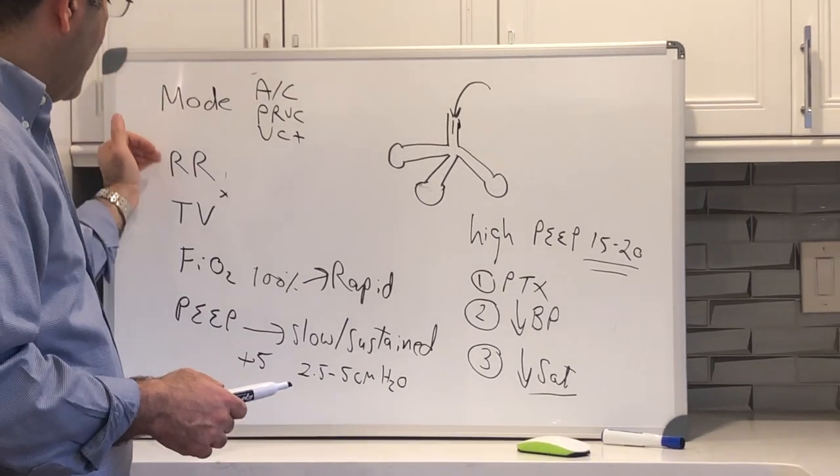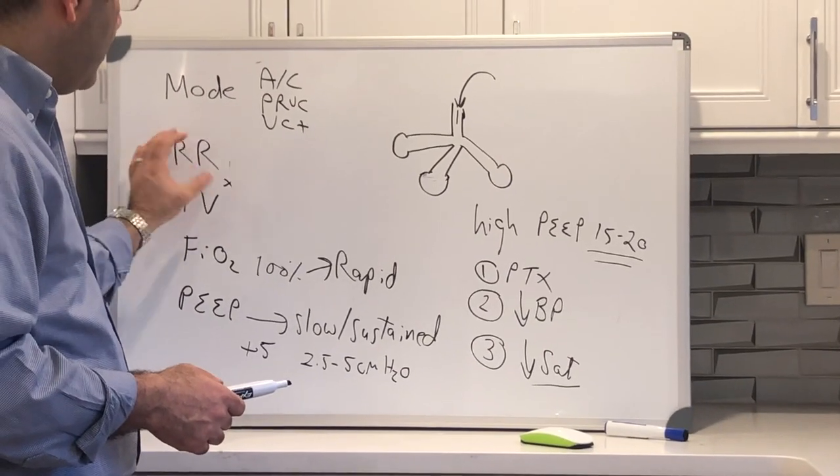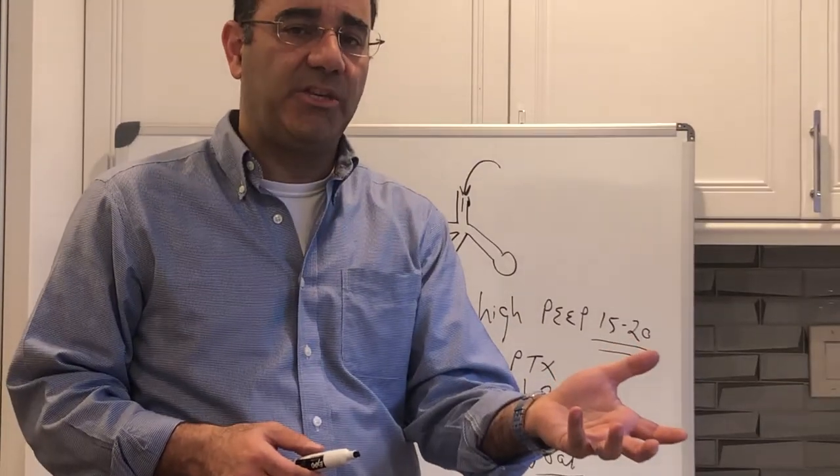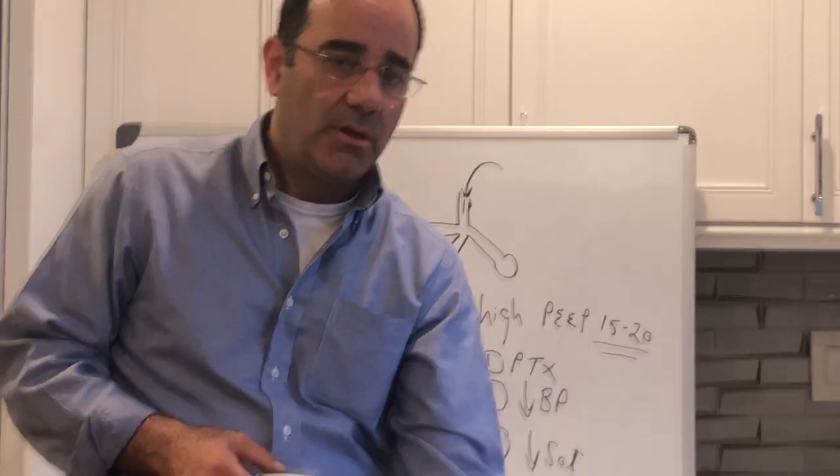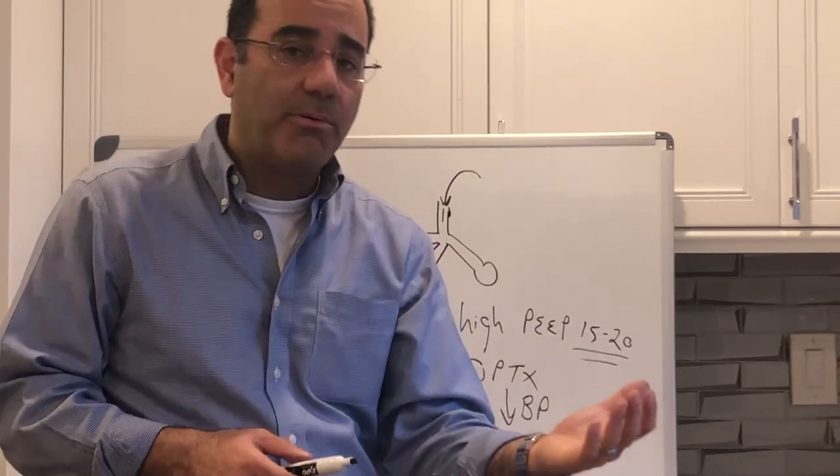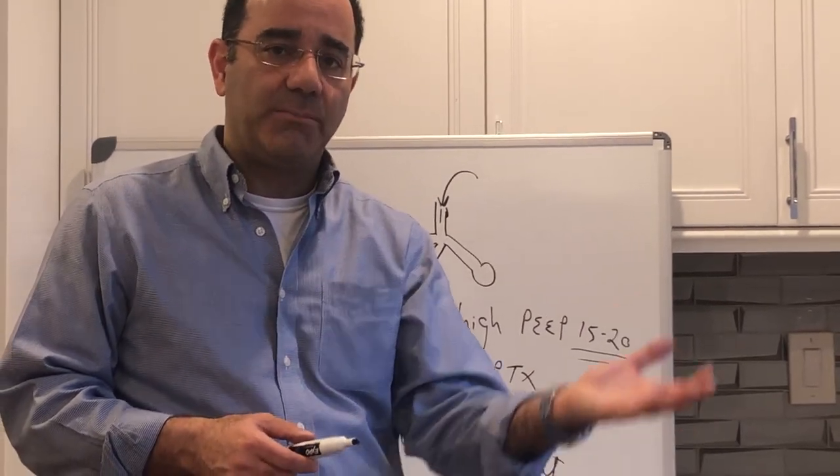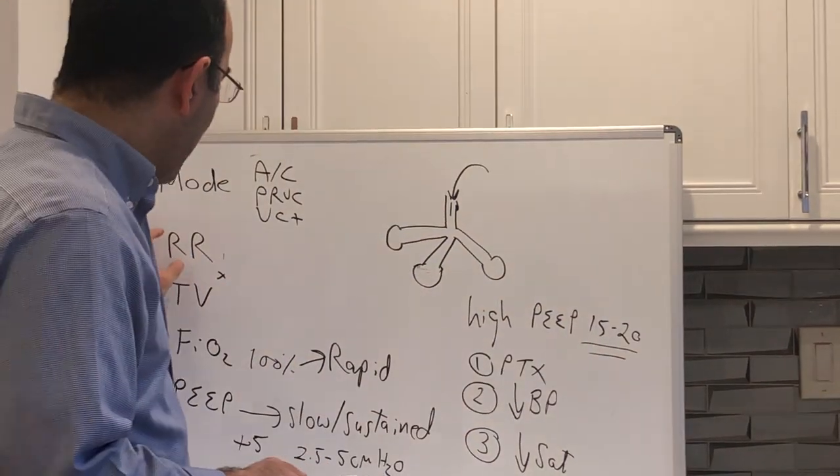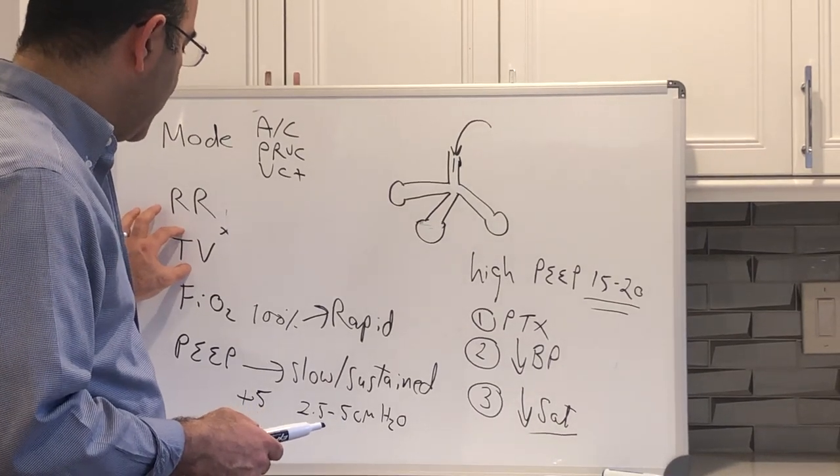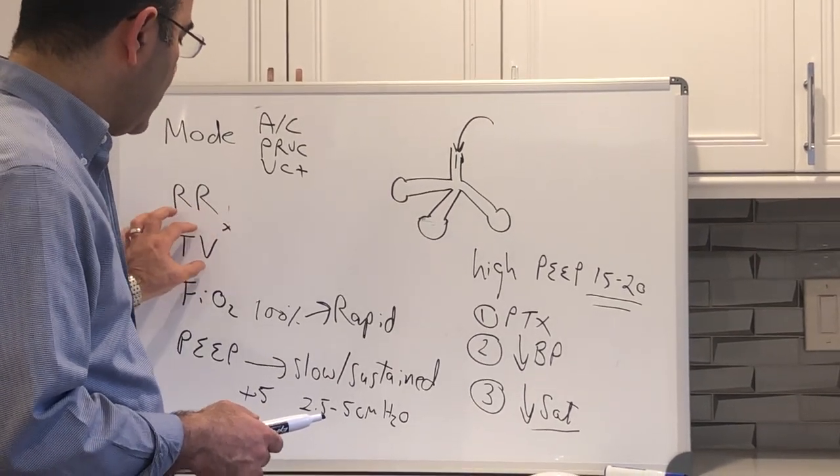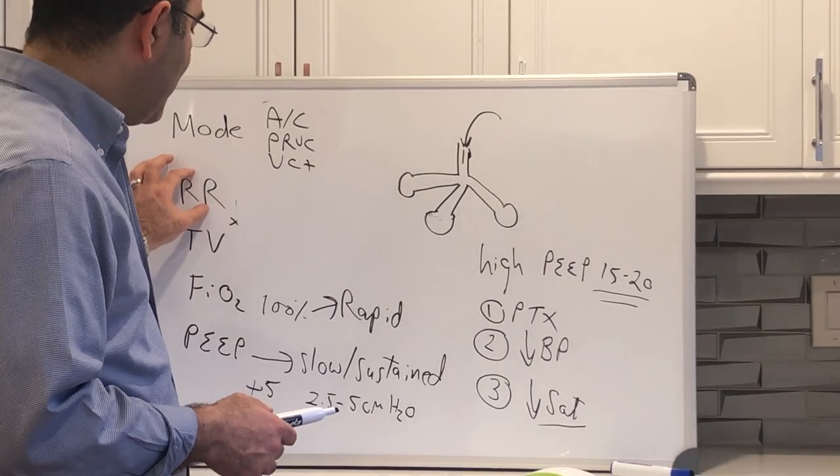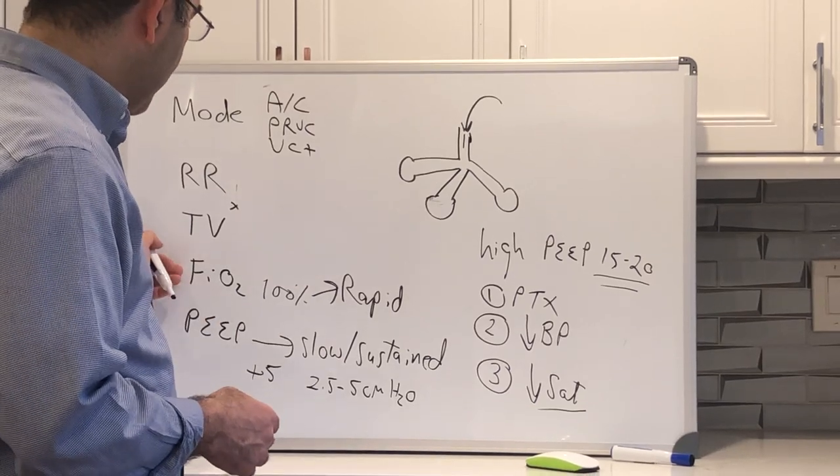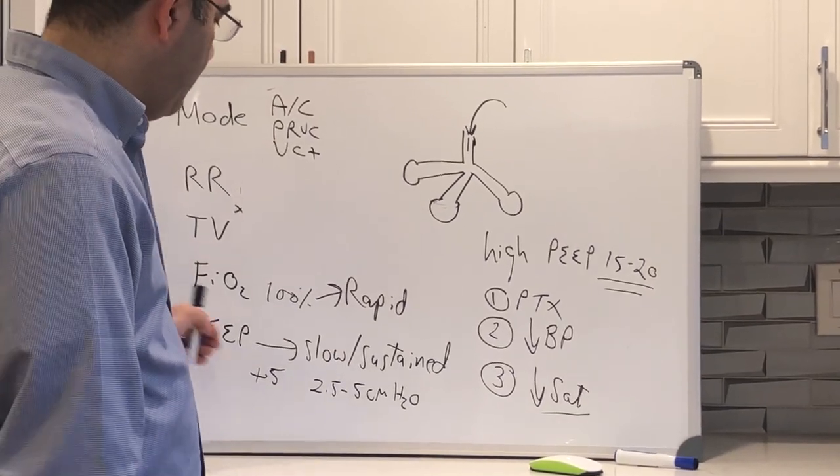We've talked about the mode, respiratory rate and tidal volume, minute ventilation, how minute ventilation is inversely proportional to the pCO2. Minute ventilation is directly proportional to the pH. As minute vent goes up, pH goes up because you're blowing off the acid. We talked about how to figure out these two numbers: 8 to 10 cc's per kilo for tidal volume in the normal patient, 5 to 6 in the ARDS patient. And we talked about FiO2, we're going to start at 100% and PEEP.